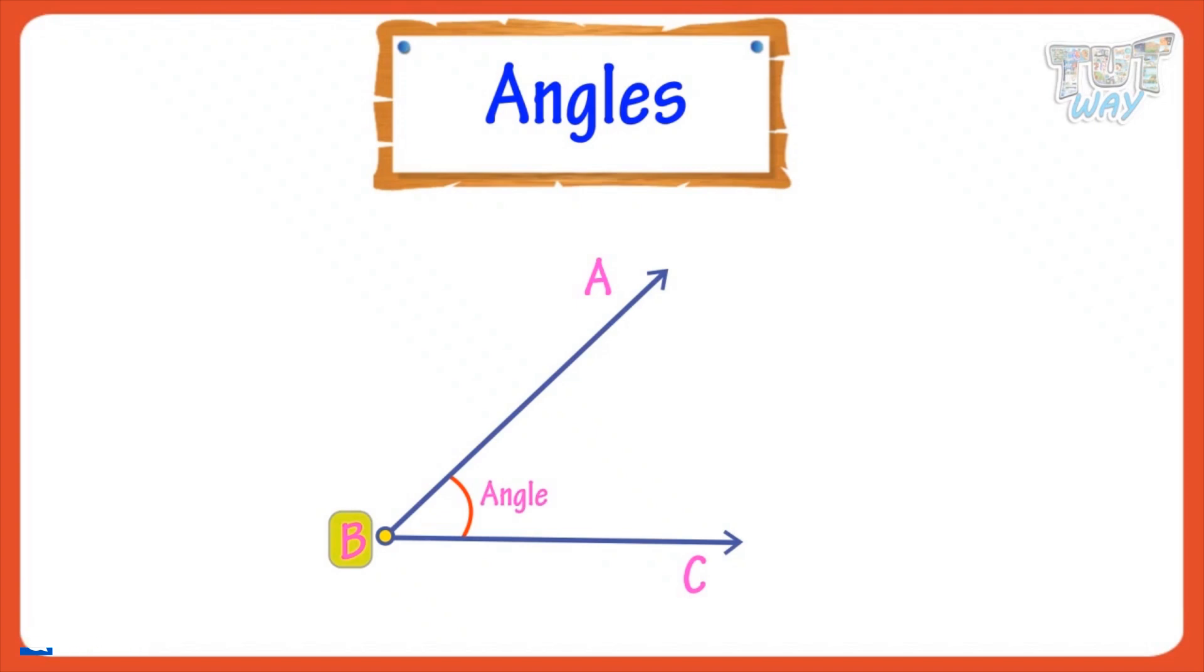Here, B is the vertex of the angle. AB and BC are legs of the angle.